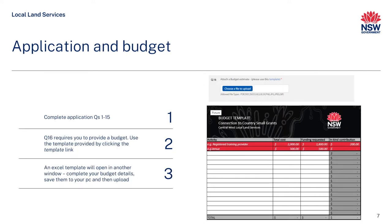Questions 1 to 15 capture information regarding your organisation and the project you're seeking funding for. To support your application and the assessment criteria, you are required to submit a project budget. The budget should clearly outline the estimated expenses relating to the project and whether the amounts are to be funded or to be an in-kind contribution. An easy to use template will open in another window. Please ensure you complete and save it prior to uploading into question 16 for submission.